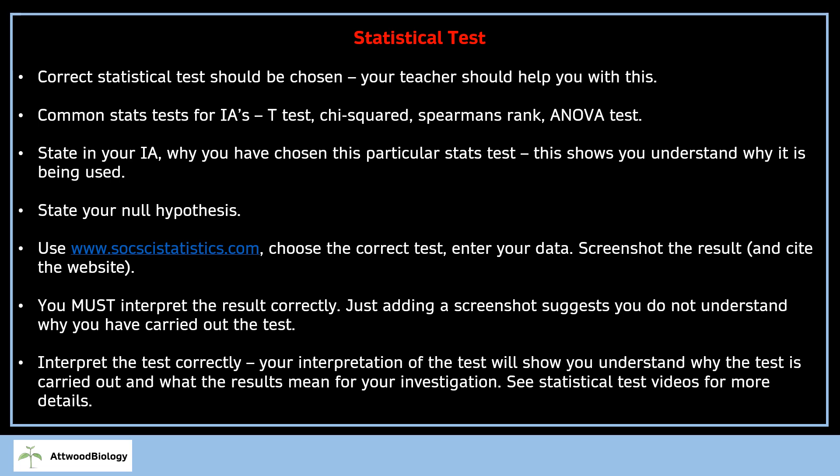That's usually there will be no significant difference between whatever your variables are. I use this SocSci statistics website because you just punch in your data and it throws out all the calculations. But you need to make sure you cite the website when you do that. You must interpret the result correctly. At this point, anyone can throw numbers into a website and screenshot it. You need to be able to explain what the results of that stats test mean for your results—interpret it and say whether you'll accept or reject the null hypothesis you previously outlined. Your interpretation shows you've understood it. See my statistical test videos for more details.